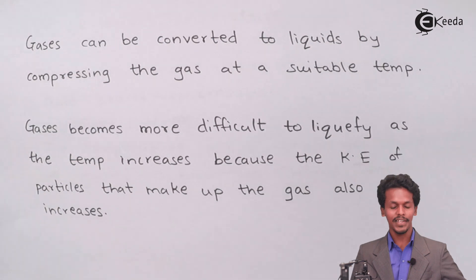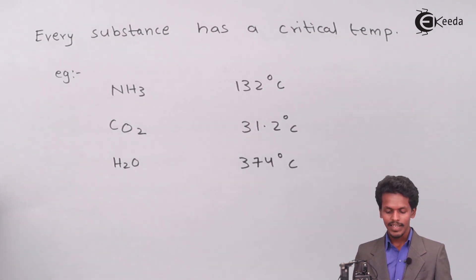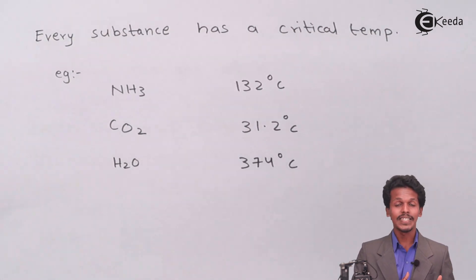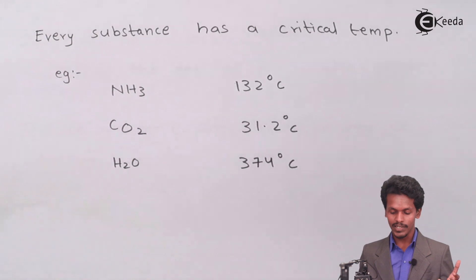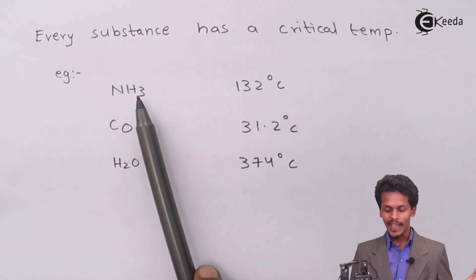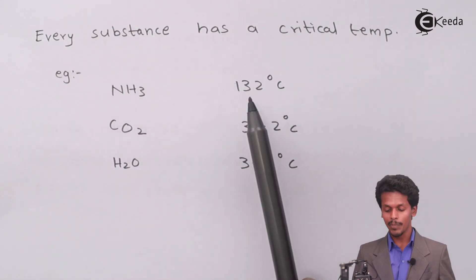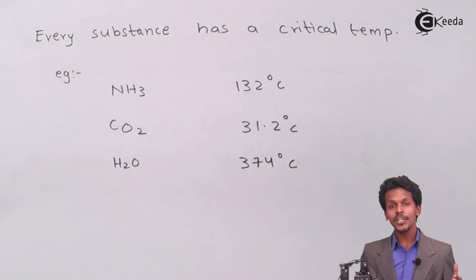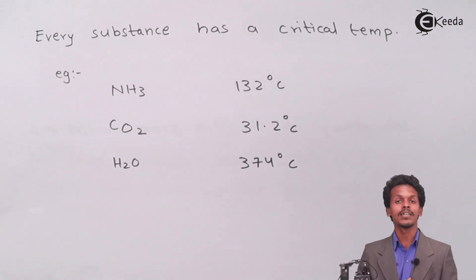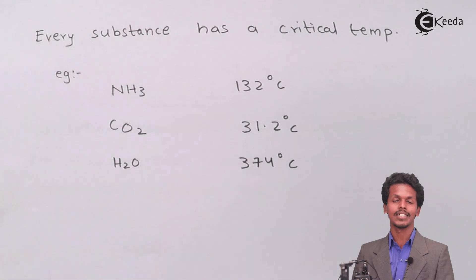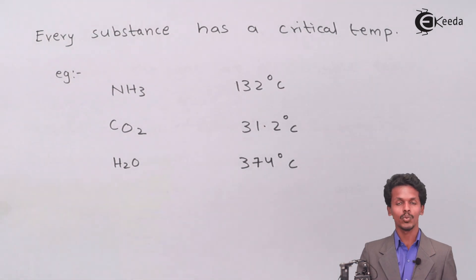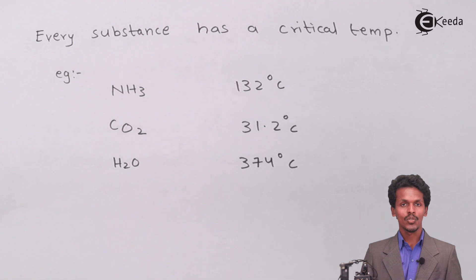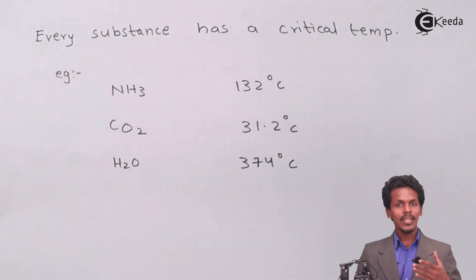Every substance has its own critical temperature. For instance, ammonia has a critical temperature of 132 degrees Celsius. This means that if you apply a temperature higher than 132 degrees Celsius to ammonia, what happens is that...